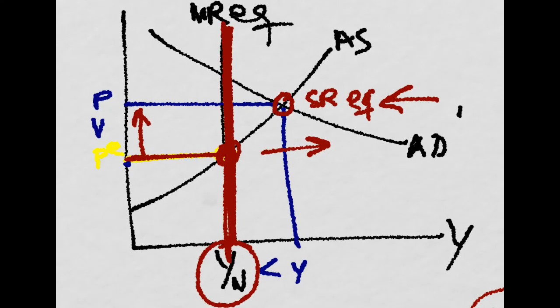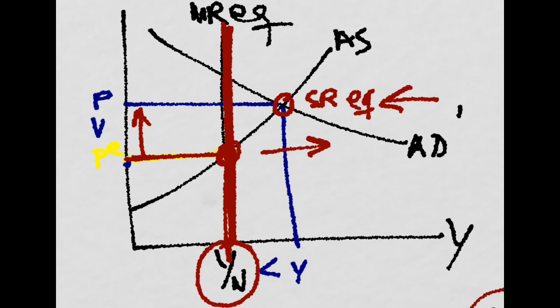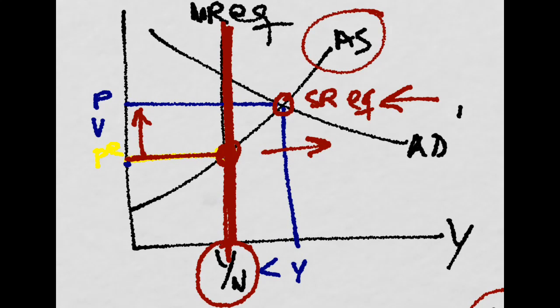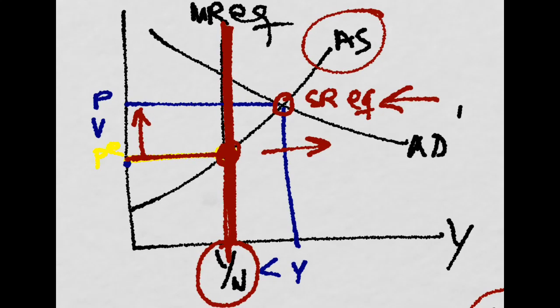Remember, the expected price level is given by the labor market, and the labor market is embedded in the aggregate supply. So that is just this cut right here.